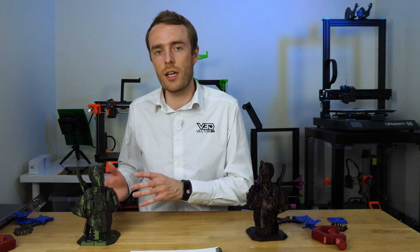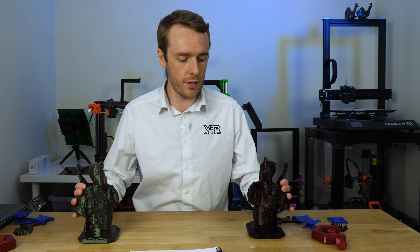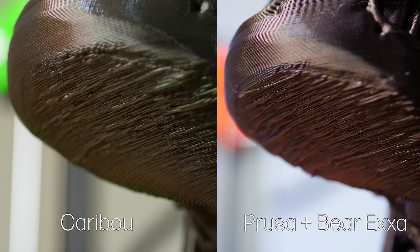Obviously the prints that we did today are largely comparable. There are differences, in some cases the Caribou was better, in some cases the Prusa was better. On these aesthetic prints it's very difficult for me to tell the differences between them, although there are some obviously improvements on that overhang. The thing that I think you would need to take into account is the kind of longevity of these two machines.